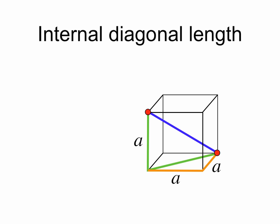So we can calculate the other green line using the Pythagorean theorem, it's just a times the square root of 2.